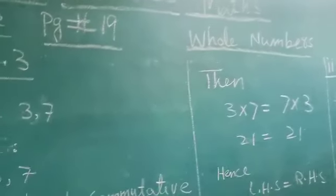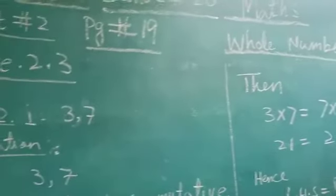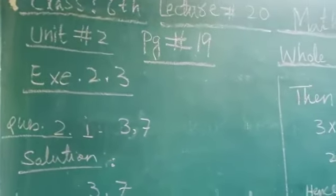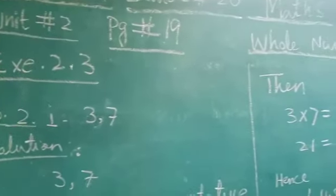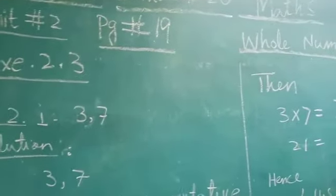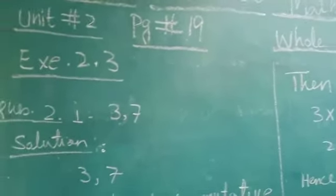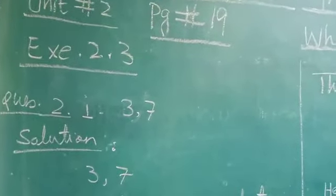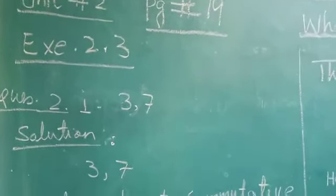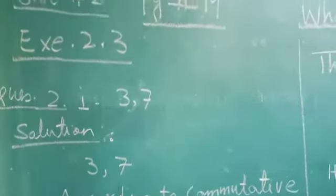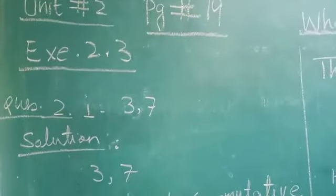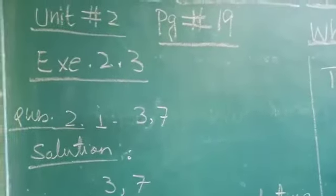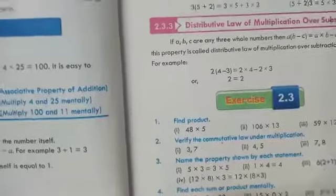Now open your books, page number 19, unit number 2 which is whole numbers. We are doing whole numbers. Exercises 2.1 and 2.2 we have done before. Now see 2.3, page number 19.